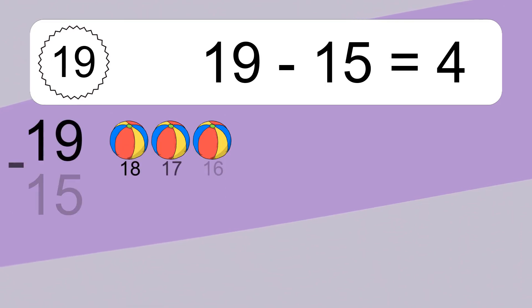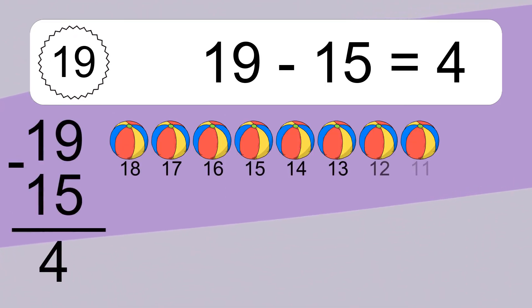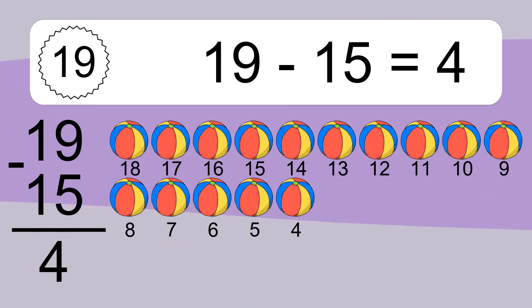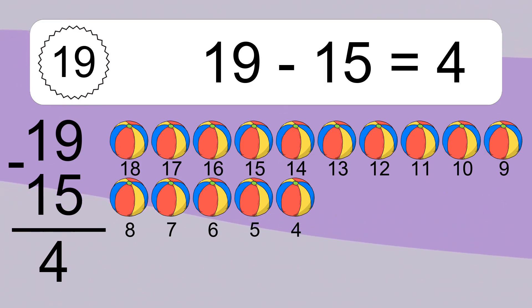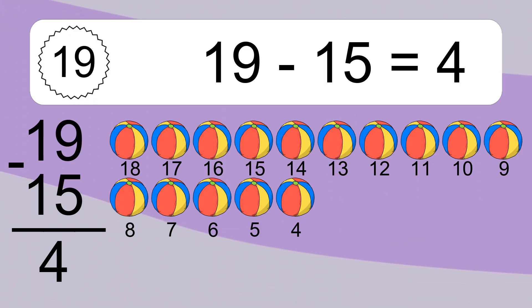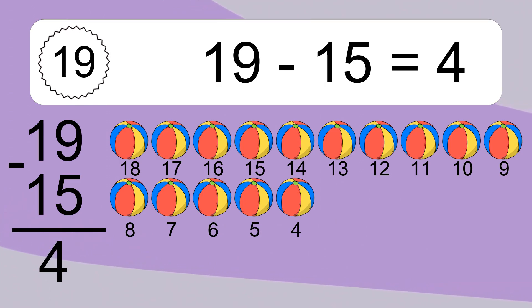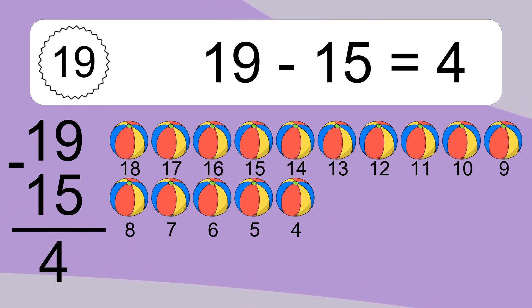19 minus 15 equals what? 19 minus 15 equals 4. Let's count it: 14, 13, 12, 11, 10, 9, 8, 7, 6, 5, 4.